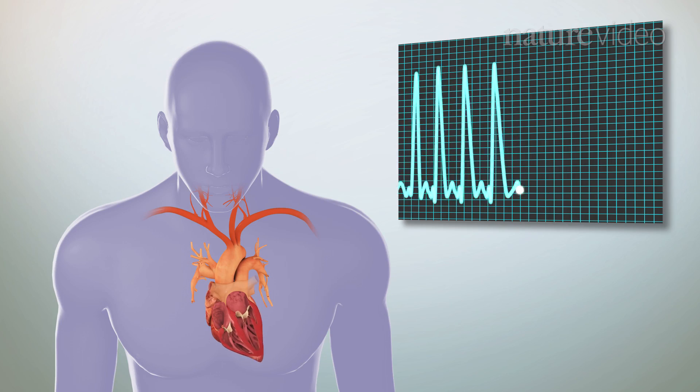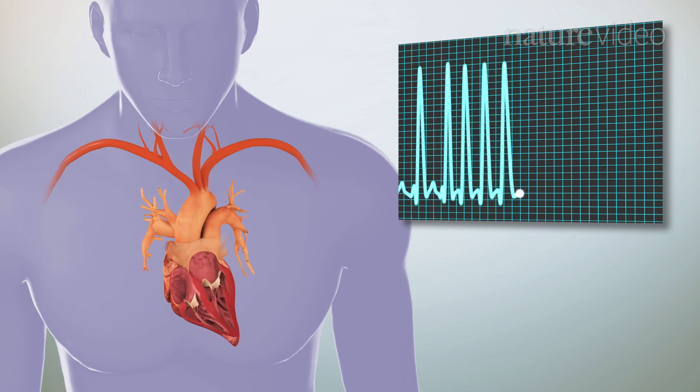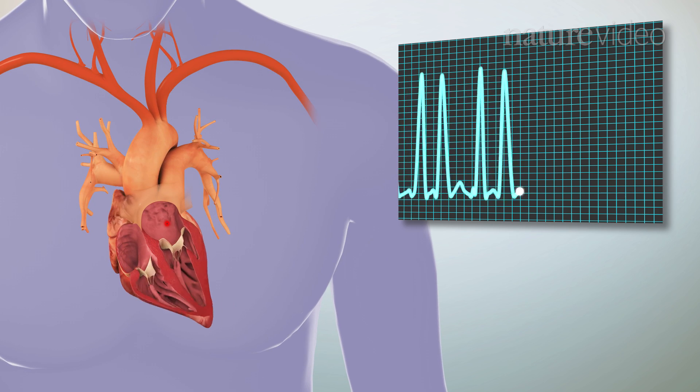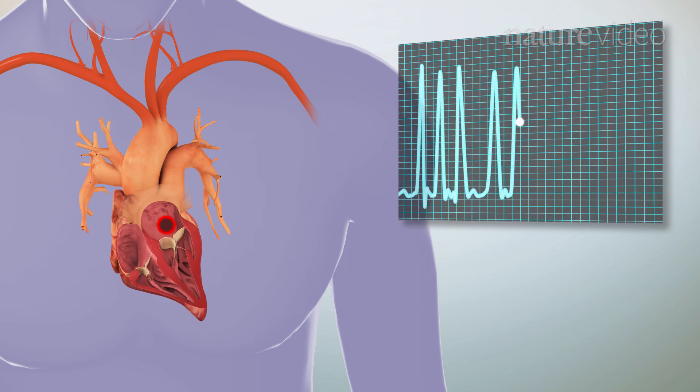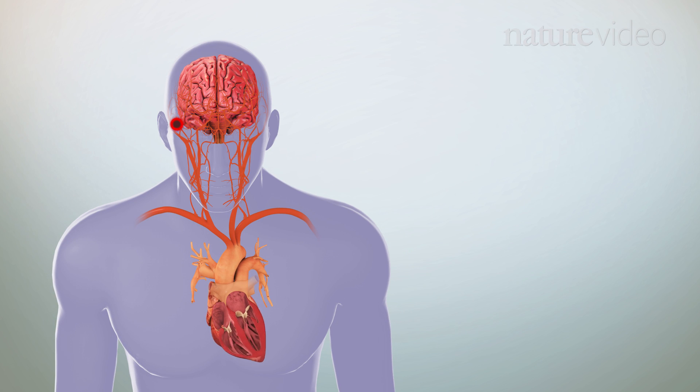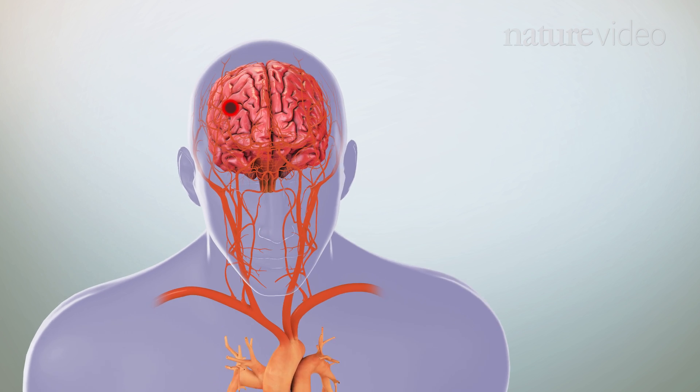In patients with atrial fibrillation, the most common form of cardiac arrhythmia, a clot can form as a result of the ineffectual contraction of the left atrium. If the blood clot leaves the heart and travels through the circulatory system to the brain, a stroke can occur.